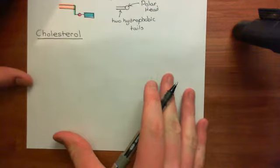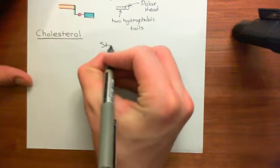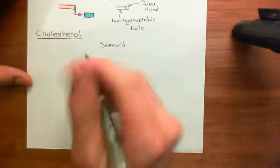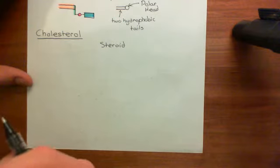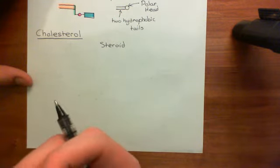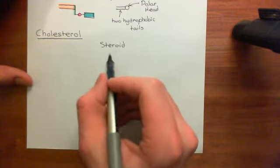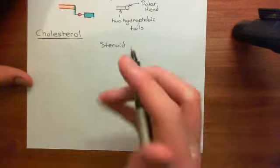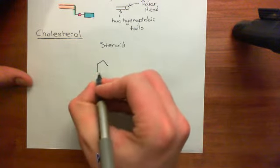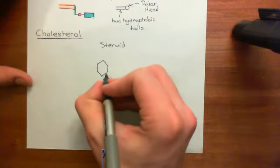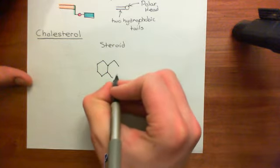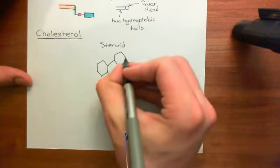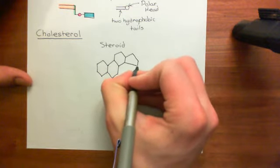Cholesterol is a sterol. To discuss what a sterol is, we need to start with what a steroid is. This comes as a shock to most people: steroid molecules are actually defined chemically — on the basis of their chemical structure. It's a chemical criterion, not a biological criterion. Most people think of steroids as molecules that have some biological activity, a biological definition based on function, but in fact it's a chemical definition.